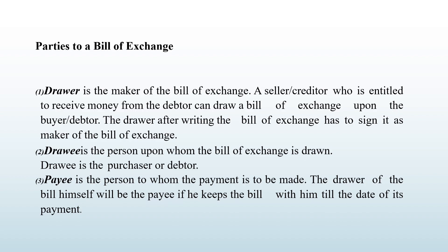The drawer is the seller or creditor who draws the bill of exchange. The second party is the drawee, who is the debtor or banker upon whom the bill is drawn. The third party is the payee, to whom the payment is made.